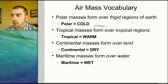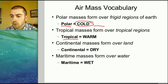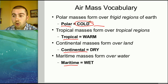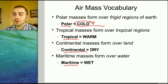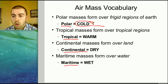Polar air masses form over frigid regions of the Earth, so they're going to be cold. We're going to get polar air masses forming in the northern part of North America, maybe the northern Atlantic or Pacific Ocean, up towards the Arctic regions. Technically we can call those Arctic air masses, but for our purposes, anything coming from up north is going to be polar and cold.